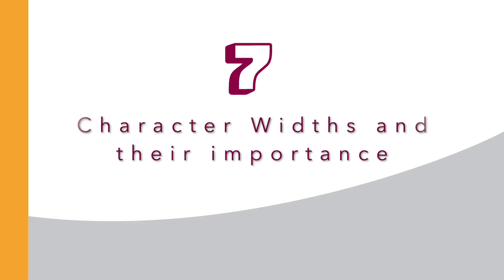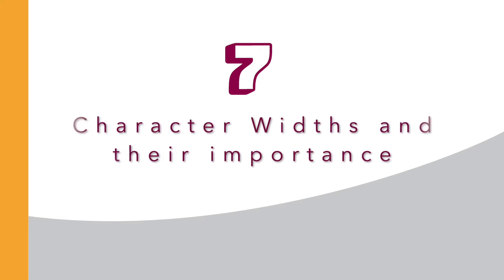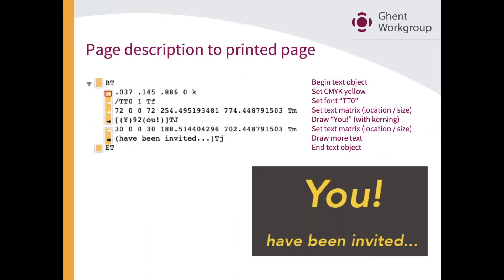Character lists — we've already seen a lot of this. If you have a page description, there will be some characters in there, and if you then show that on a page, you get what you see in the bottom right corner. The question is: these words have been placed there, so there is a starting point for that sentence, but nothing else. It doesn't say where the A, the V, or the E has been drawn. The only thing we have in the text matrix is where the first character goes.